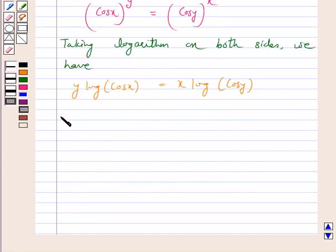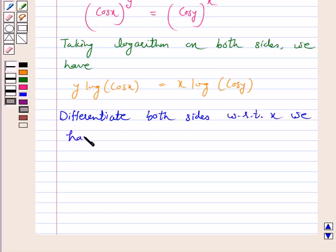Differentiate both sides with respect to x. We have y · (1/cos x) · (-sin x) + log(cos x) · dy/dx.